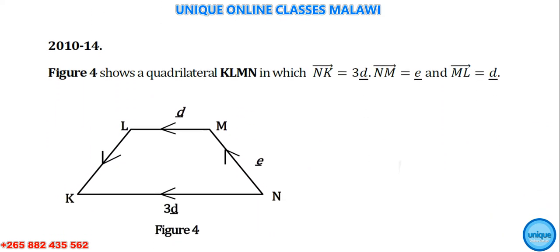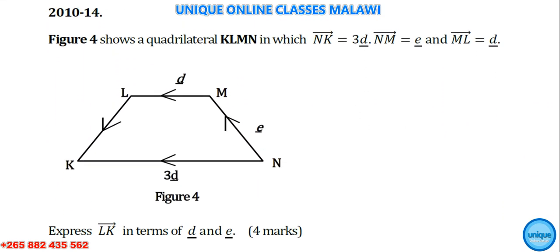The question reads: Figure 4 shows a quadrilateral KLMN in which NK = 3d, NM = e, and ML = d. Express LK in terms of d and e. This is a 4 marks question number 14 from 2010.